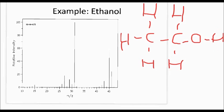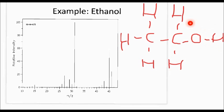Because the peak at 31 is much taller, that's a more stable fragment. The molecular mass of ethanol is 46, visible as the molecular ion on the right-hand side. There's also a peak at 45 where one hydrogen has been lost — any of the six hydrogens in ethanol could have been lost to form that peak at 45.